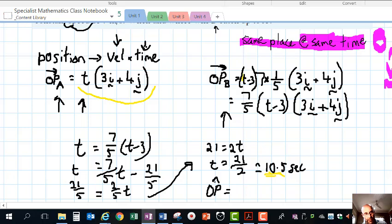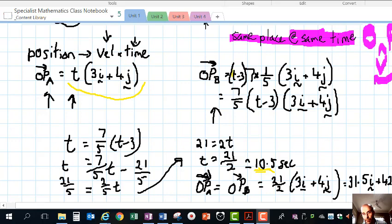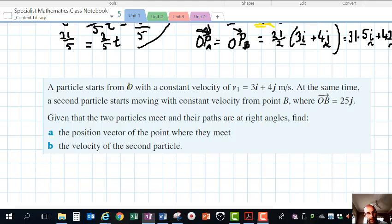Using the position vector OP for A or B, we substitute in: 21/2(3i + 4j). That gives us 31.5i + 42j meters as the position. Starting from O, P would be there.